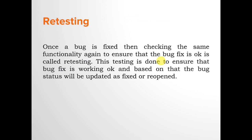Retesting means that once a bug is fixed, you check the same functionality again to ensure the bug fix is working correctly. This testing ensures the bug fix is valid, and based on the result the bug status is updated as verified fixed or reopened. If the bug fix is working, you mark it as verified fixed; if not, you reopen the bug and assign it back to the responsible developer.